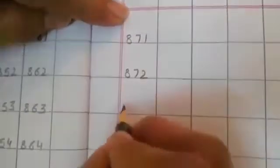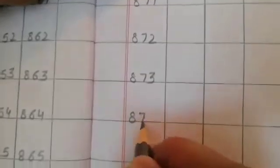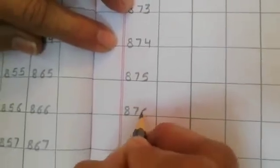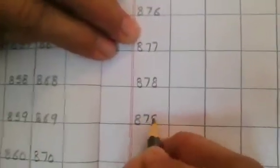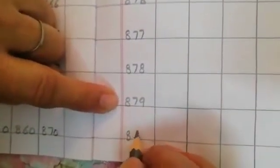871, 872, 873, 874, 875, 876, 877, 878, 879. What comes after 879?